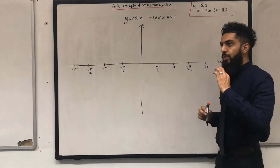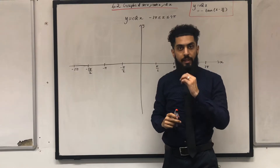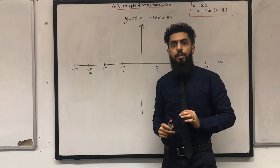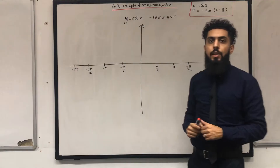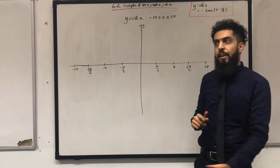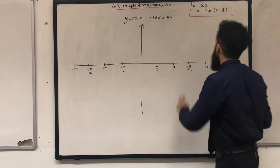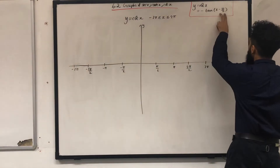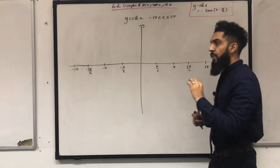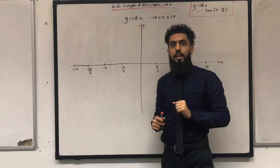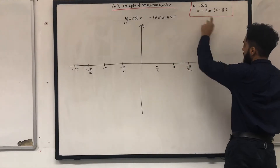So to sketch y = cot x, what we need to do is apply a sequence of transformations on the graph of y = tan x. We first start with tan x and shift it π/2 units to the right. Once we've done that, we take that graph and reflect it in the x-axis.